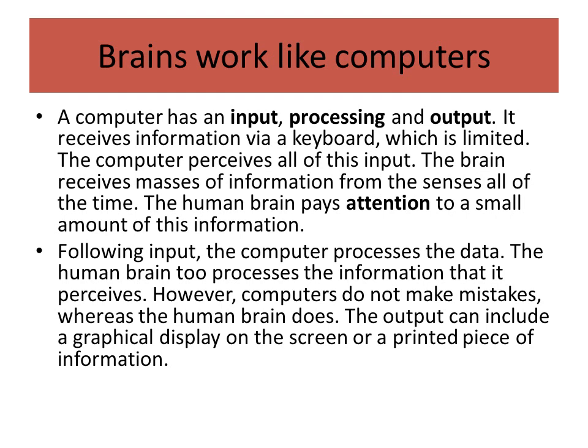The human brain inputs information through our senses and pays attention to a small amount of that information, which is then processed. For example, right now I'm listening to what I'm saying, but I'm not necessarily paying much attention to what I can feel on my skin. This then creates an output — so the output at the moment is the words being spoken.